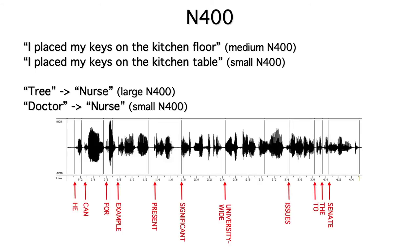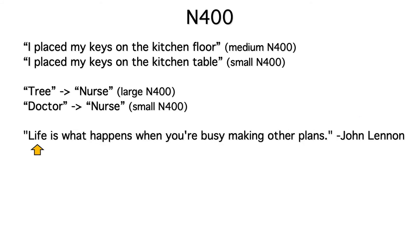These effects can also be seen when people listen to natural speech rather than reading words on a computer monitor. The general idea is that every word you see or hear generates some amount of N-400, with a larger amplitude to the extent that the word can't be predicted from what came before it. For example, in this famous quote from John Lennon, the first word is completely unpredictable and would generate a large N-400.